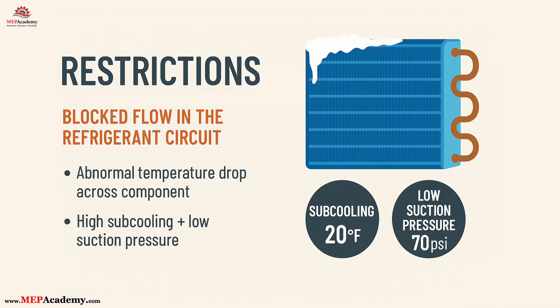Number four: restrictions — blocked flow in the refrigerant circuit. Restrictions in the refrigerant circuit choke the system, leading to high sub-cooling and starving of the evaporator. A common culprit is a blocked filter dryer or debris at the TXV inlet screen. A normal temperature drop across a component like a filter dryer is minimal, typically 1°F or less, while an abnormal drop of 3°F or more indicates a restriction or blockage impeding refrigerant flow.